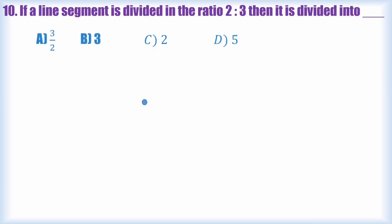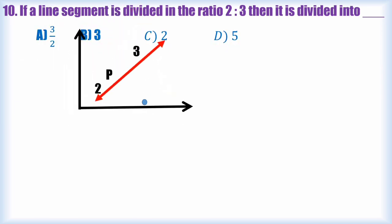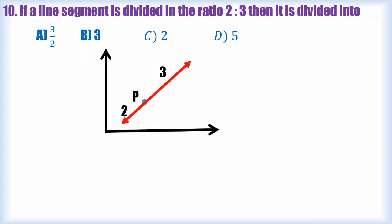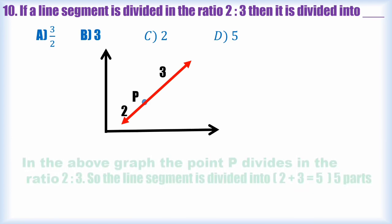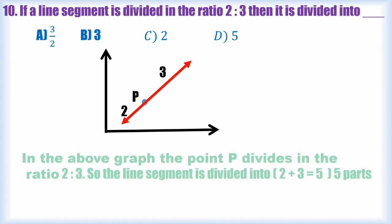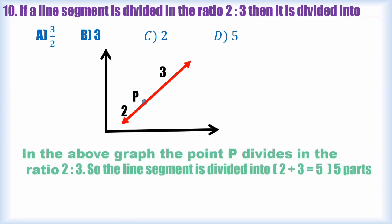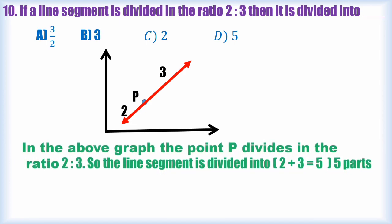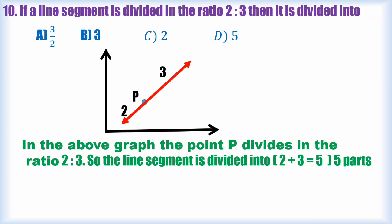Next 10th question. If a line segment is divided in the ratio of 2 is to 3, then it is divided into how many parts? That's a question. In the above graph, you can see that the point P divides the line in the ratio of 2 is to 3. So the line segment is divided into 5 parts. That is because 2 plus 3 equals 5. Then line is divided into 5 parts. So D is the answer. D is the correct answer among the options.